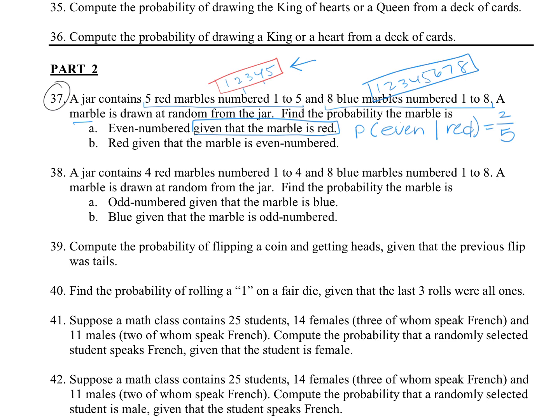For the next one, we want to know red, given that the marble is even-numbered. So we would write the probability that we are red given that we are even. So it's a little bit different.